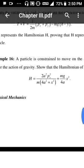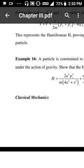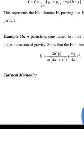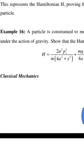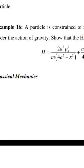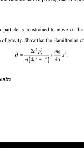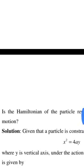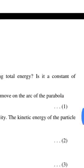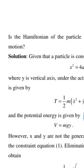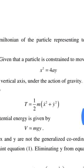Next example: A particle is constrained to move on the arc of a parabola x² = 4ay under the action of gravity. Show that the Hamiltonian of the system is H = 2a²Px²/[m(4a² + x²)] + mgx²/4a. Also determine whether the Hamiltonian represents total energy and whether it is a constant of motion.